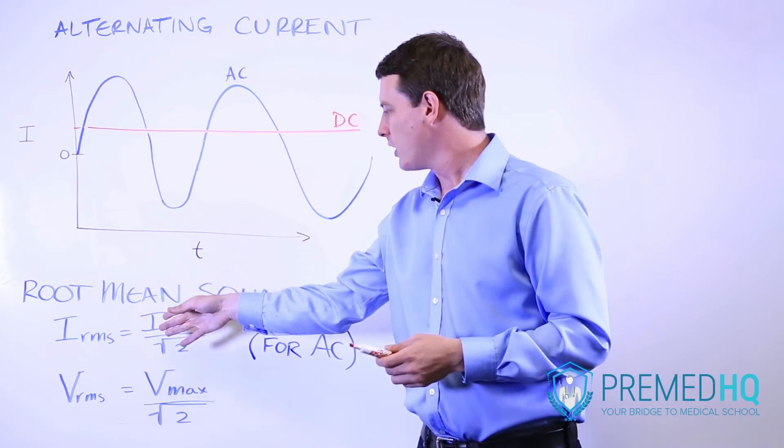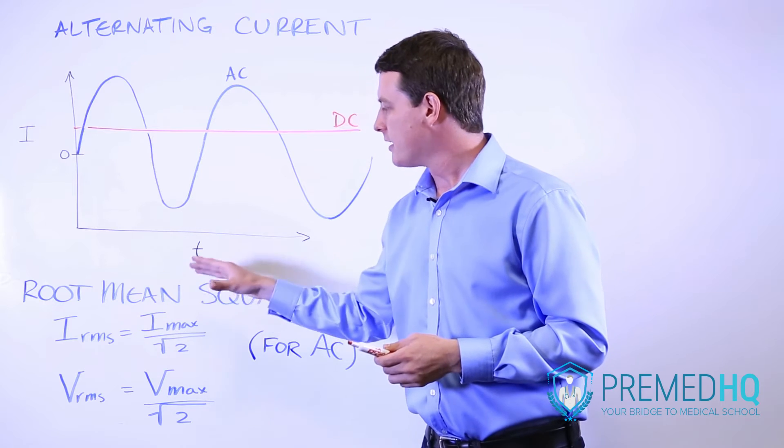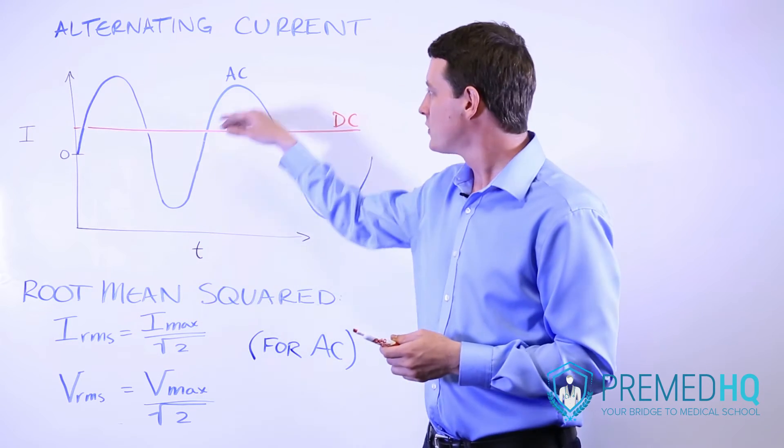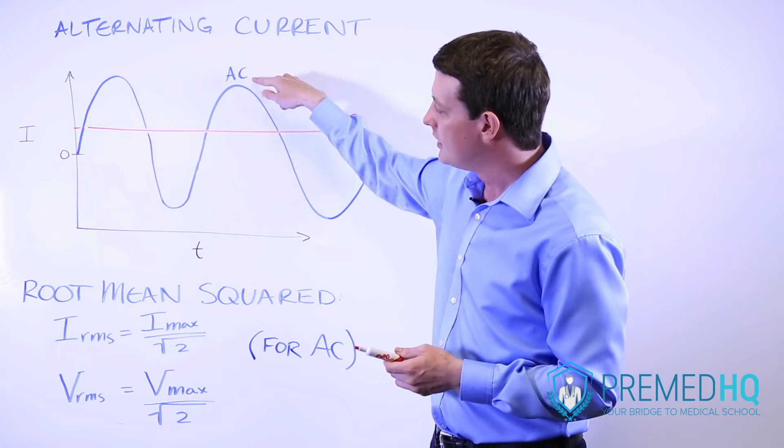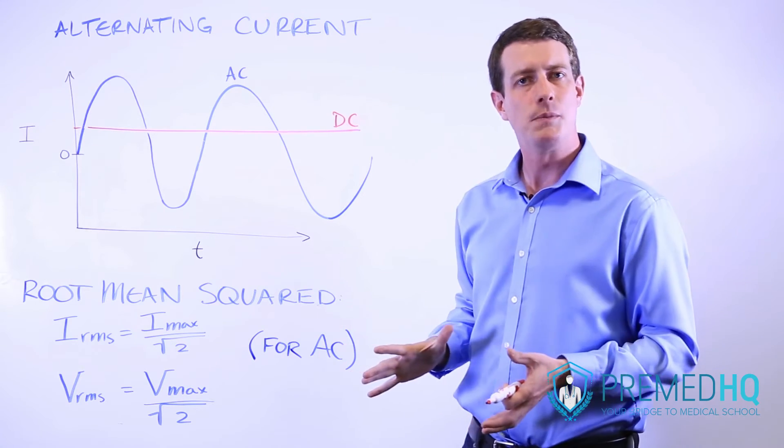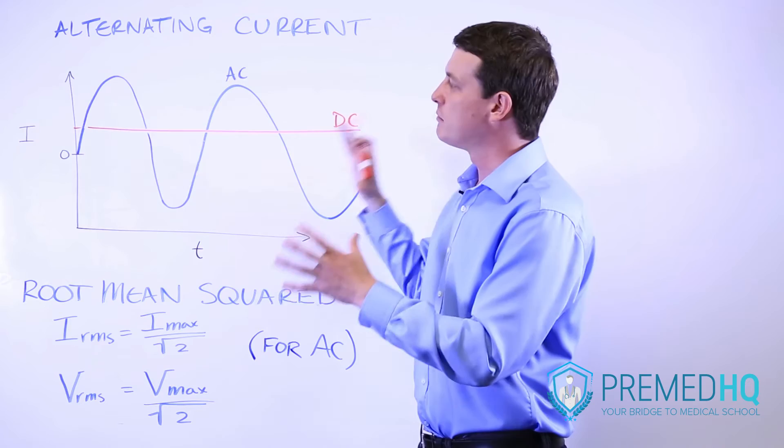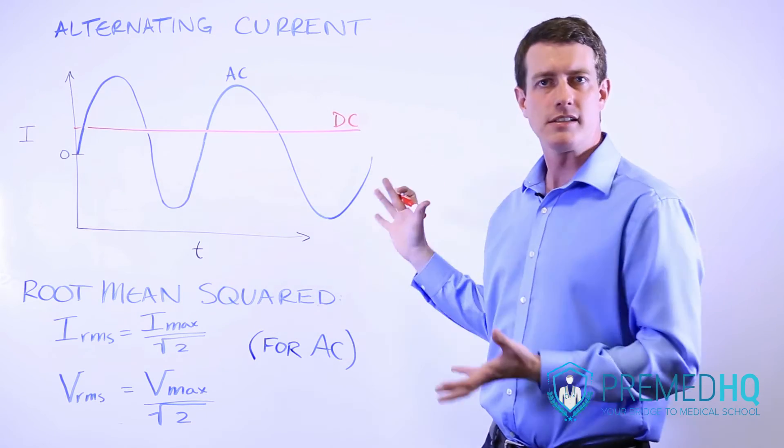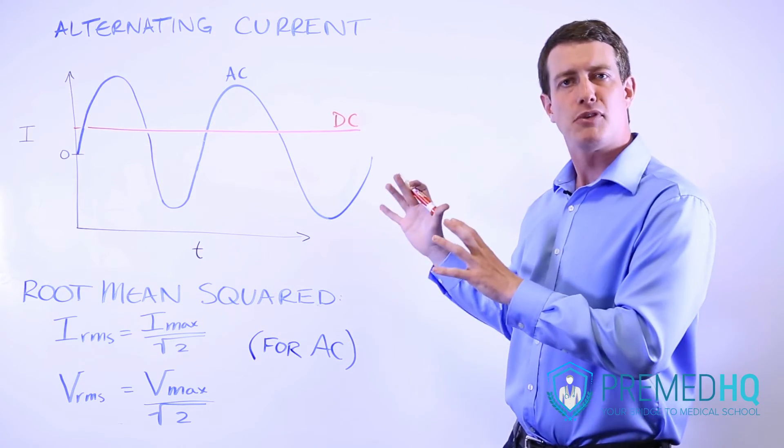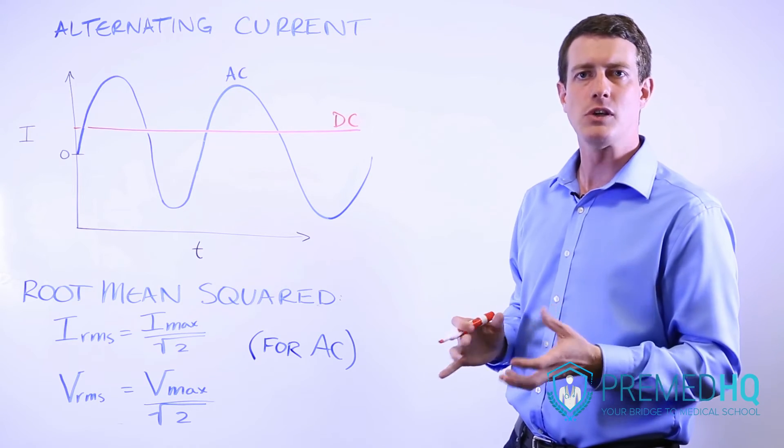The current root mean squared is essentially the maximum current being used, so this high peak here, divided by the square root of 2. The voltage root mean squared is the maximum voltage, which would be depicted on a separate type of graph, but again it's the maximum voltage divided by the square root of 2.